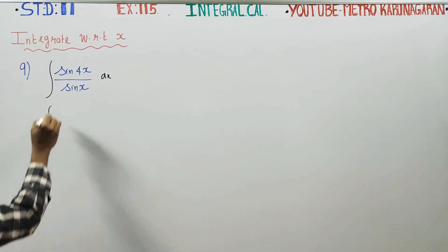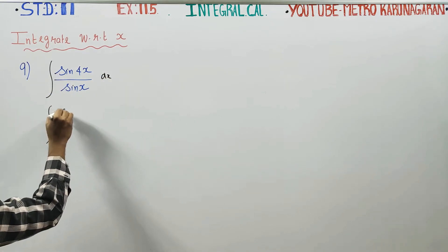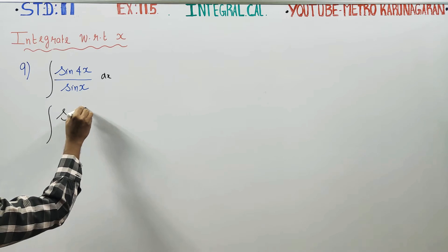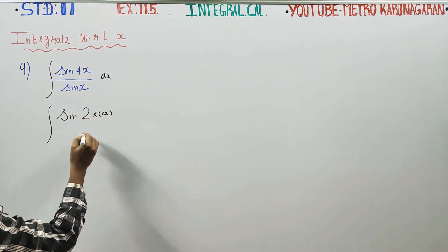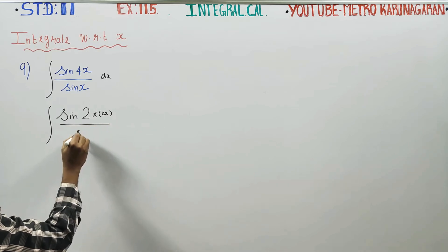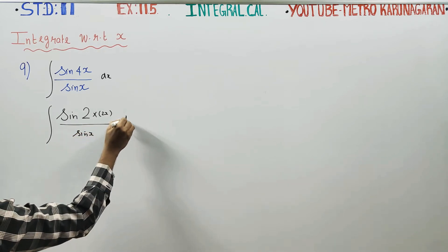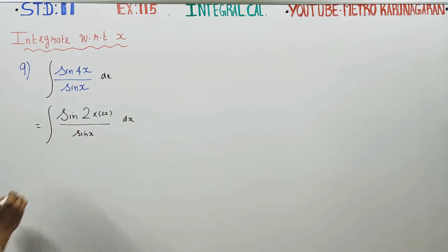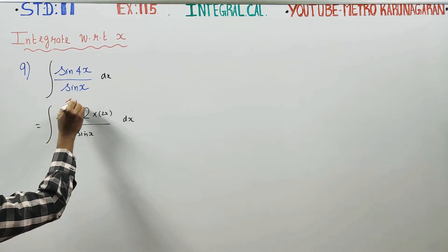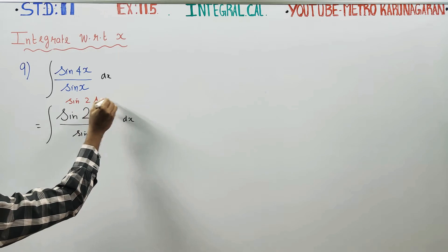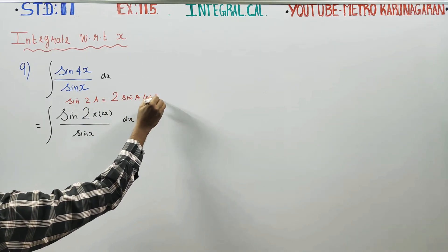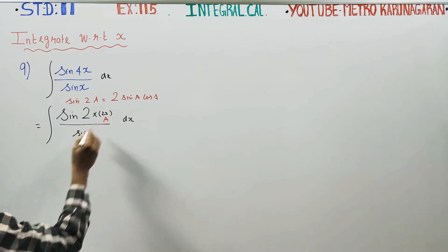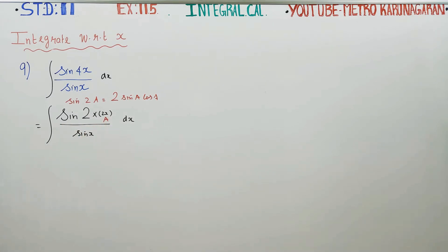Stage 1: we rewrite sin 4X as sin 2 times 2X, divided by sin X, dx. Using the double angle formula, sin 2A equals 2 times sin A cos A. Here 2A is 4X, so A is 2X.